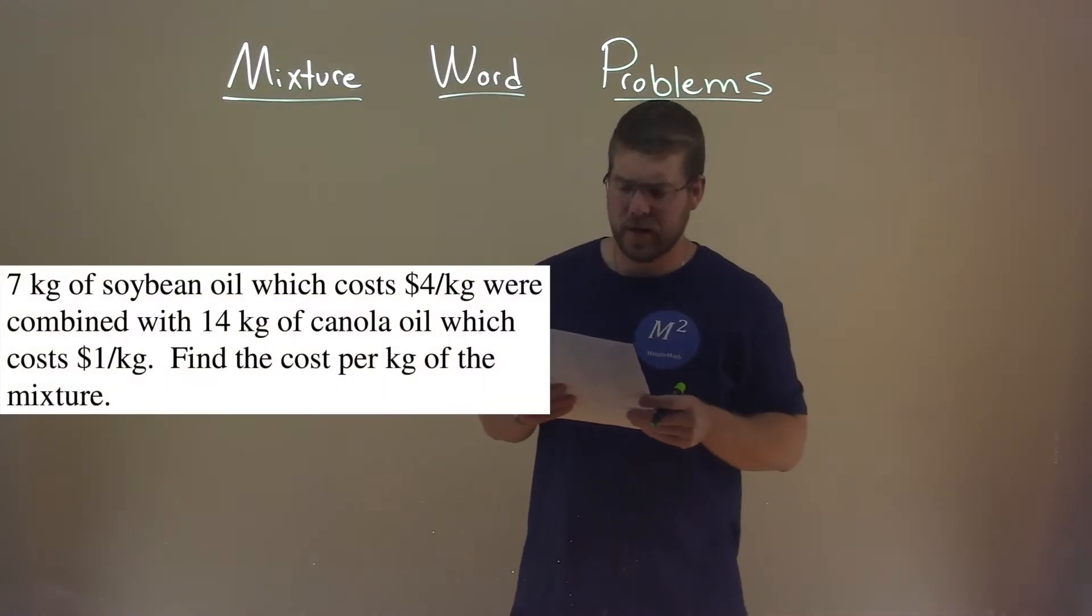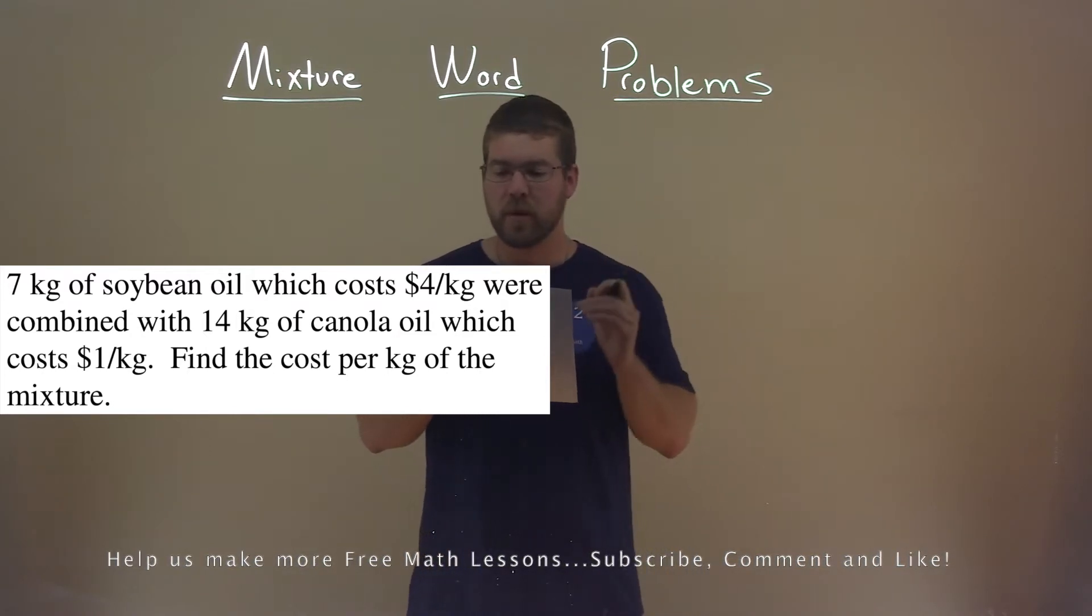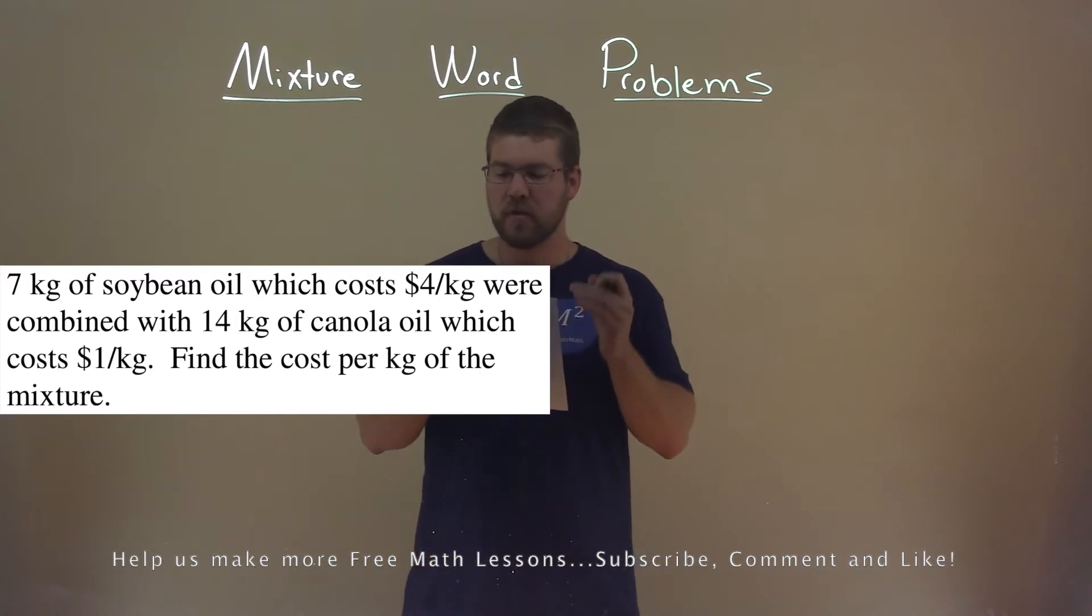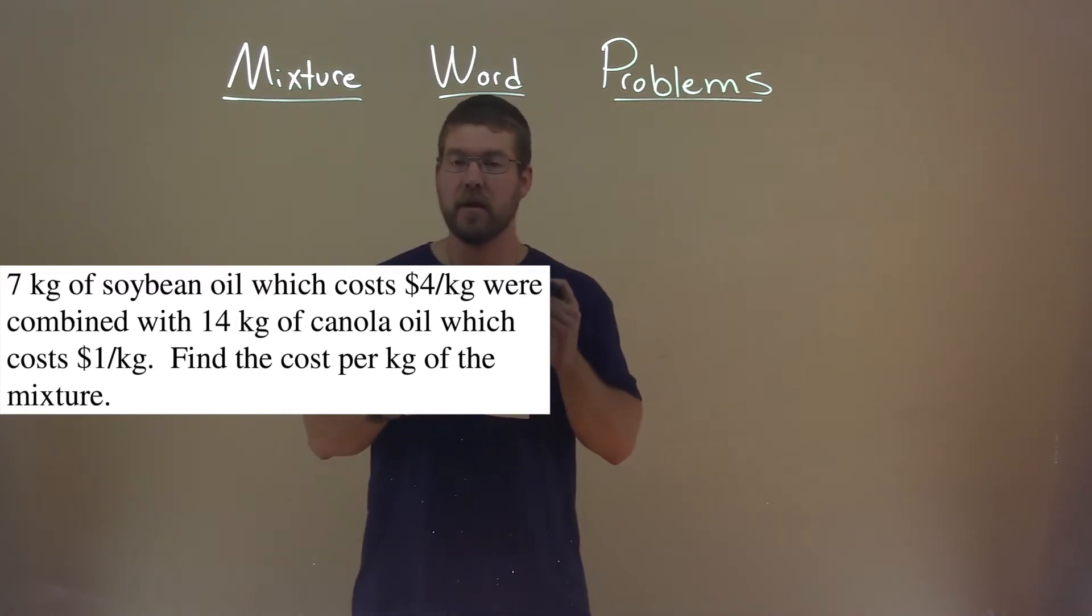We're given this problem right here. 7 kilograms of soybean oil which costs $4 per kilogram, were combined with 14 kilograms of canola oil which costs $1 per kilogram. Find the cost per kilogram of the mixture.